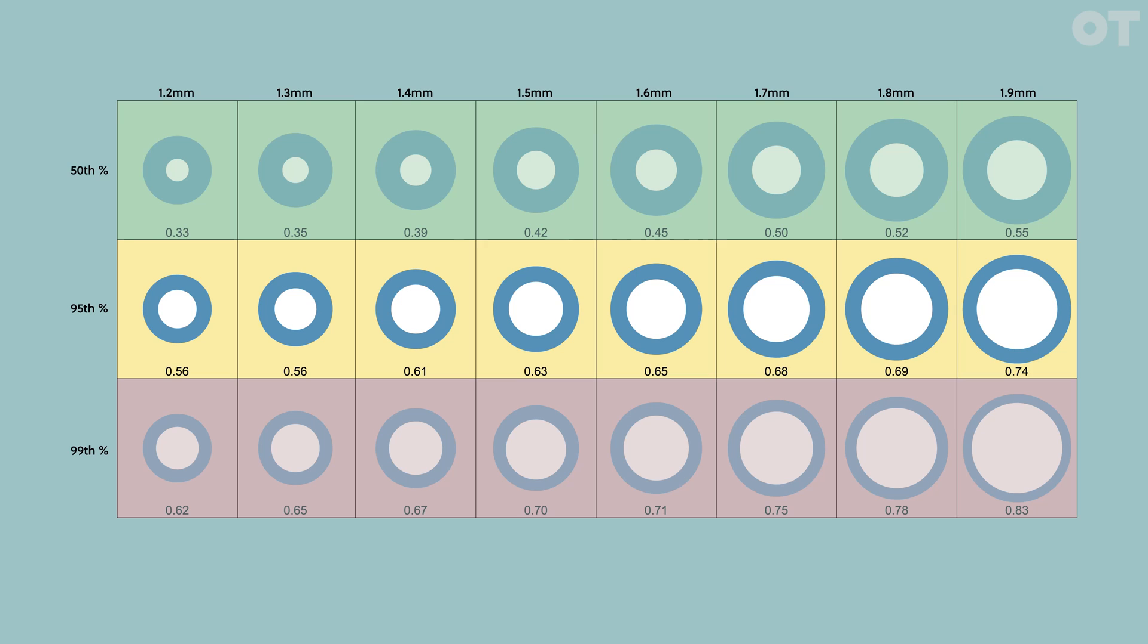The amber zone is the 95th percentile. There are very few normal optic discs with CD ratios this high. The green zone is the 50th percentile, so these are likely to be normal.